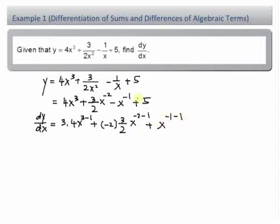The last one, 5 differentiated, I have 0. So I simplify everything. 3 times 4, I have 12x squared. 2 and 2 you simplify, you have a minus 3 here, x power negative 3, plus x power negative 2.